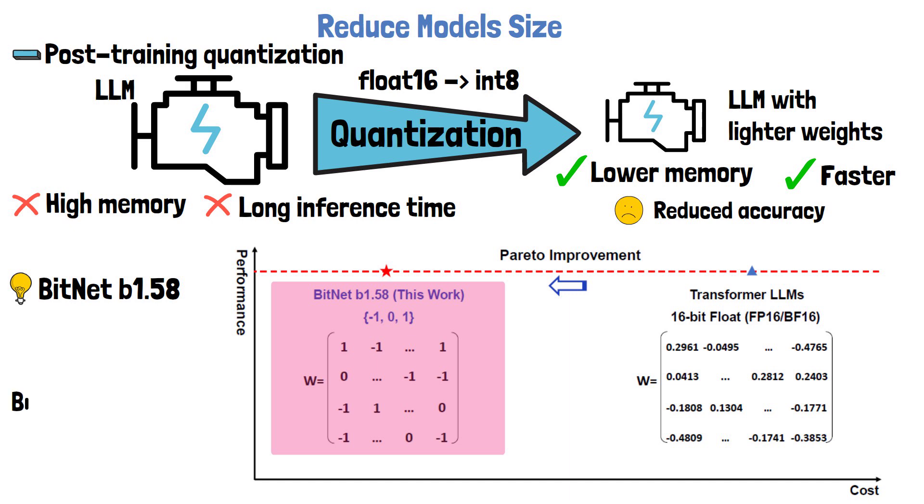Obviously, we need less than 16 bits to represent the 3 possible values, so how many bits are required? The answer is log base 2 of 3, which is 1.58, and from here the model name. So the model weights are a bit more than 1 bit. Another note here is that the model is trained from scratch and not adapted after the training. So the model learns during training how to work with such weights.